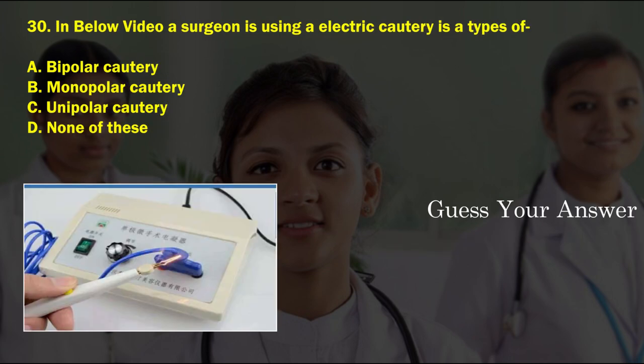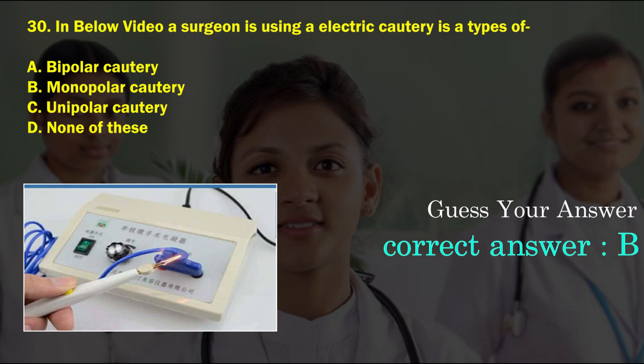In the below image, a surgeon is using electric cautery. Identify the type — option A: bipolar cautery, option B: monopolar cautery, option C: unipolar cautery, option D: none of these. The correct answer is option B, monopolar cautery.